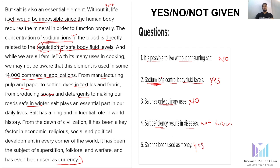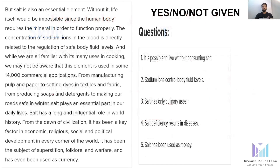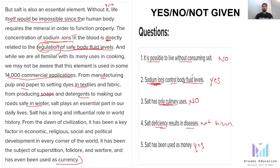This is the approach: whenever a statement matches the information, write yes; if it is opposite, write no; if it doesn't satisfy either condition, write not given. Try to keep things very simple with yes/no/not given questions — if you overthink, you might make a mistake. I hope the concepts of yes, no, and not given are clear. In the next video we will see more types of reading questions. Till then, keep learning.